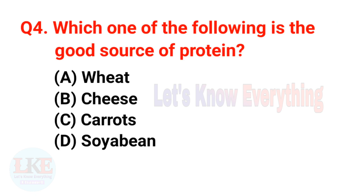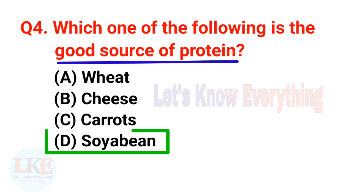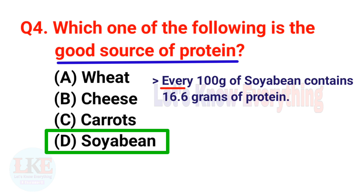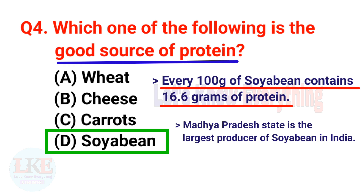Question 4: Which one of the following is a good source of protein? A) Wheat, B) Cheese, C) Carrots, D) Soybean. The right answer is option D, Soybean. Soybean is rich in protein content — every 100 grams of soybean contains 16.6 grams of protein. For your information, Madhya Pradesh state is the largest producer of soybean in India.